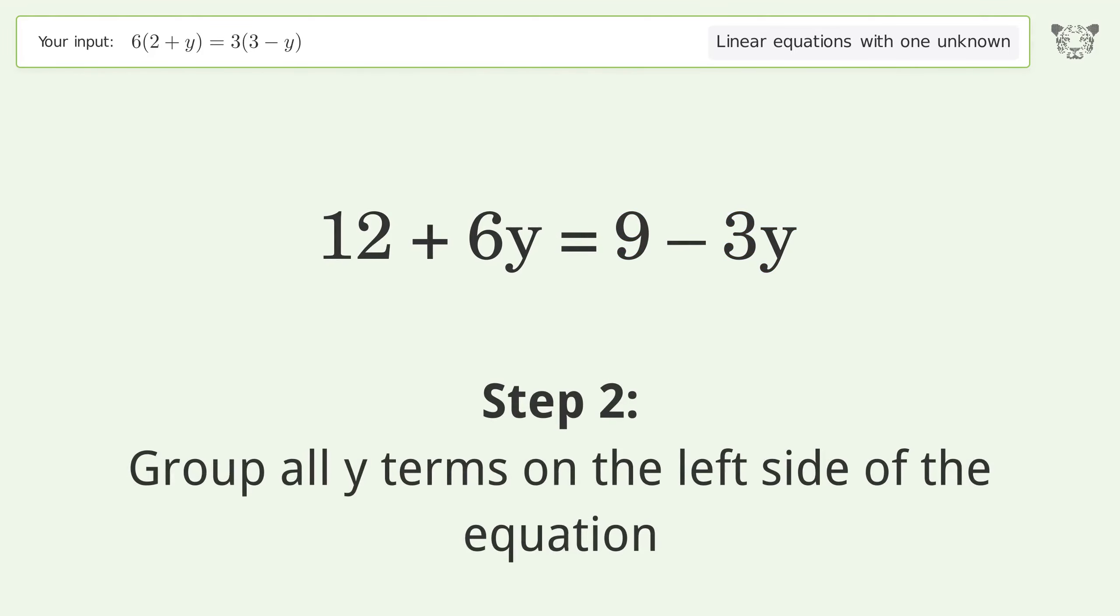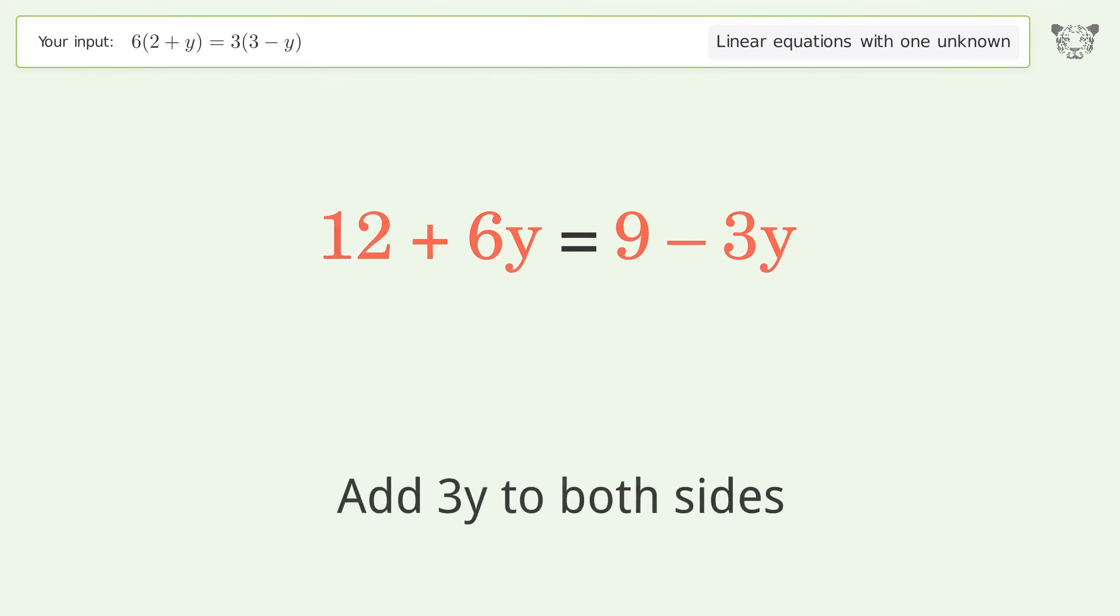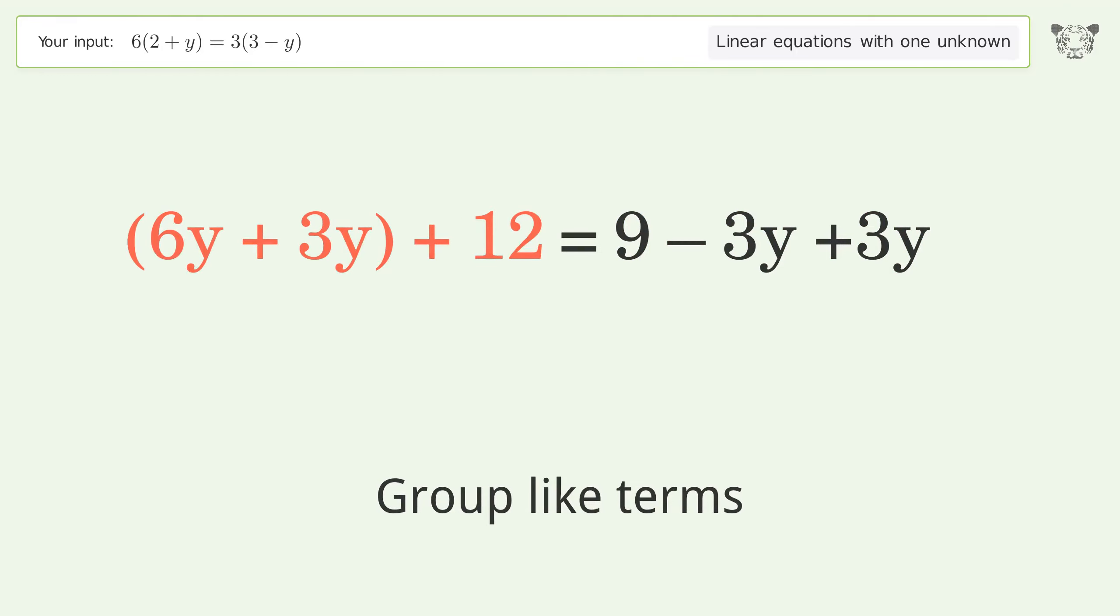Group all y terms on the left side of the equation. Add 3y to both sides. Group like terms. Simplify the arithmetic.